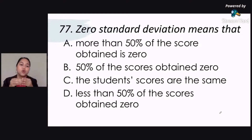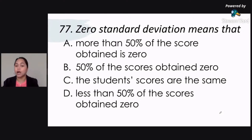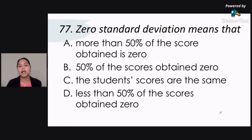Kung gaano ka-clump ang scores mo to a certain center — to a certain score or grade. Now, pag sinabi mo namang measures of variability, or measures of dispersion, meron kang standard deviation, meron kang range, meron kang iba pang klase ng mga deviations. So pag sinabi mong zero standard deviation, that means walang pagkakaiba ang score mo — walang variability, walang dispersal ang score mo. Clump sila.